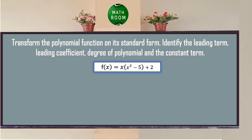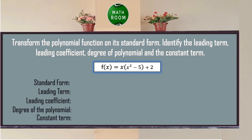Next example: f(x) = x(x² − 5) + 2. Distributing x gives f(x) = x³ − 5x + 2. The leading term is x³. The leading coefficient is 1. The degree of the polynomial is 3 (third degree). The constant term is 2.